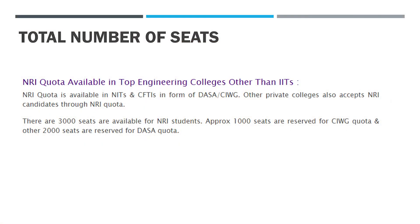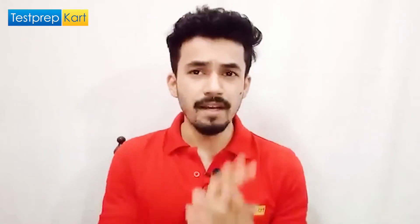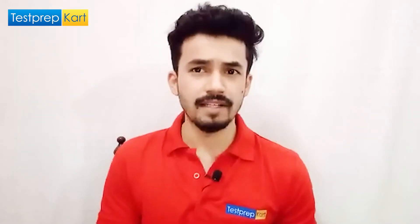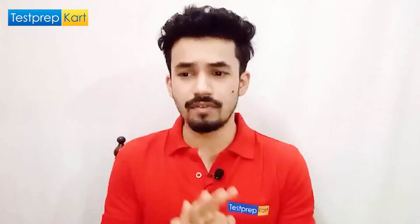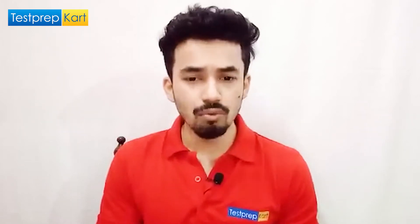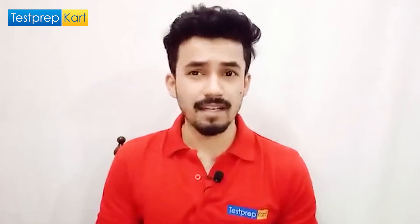NRI quota is available in NITs and CFTIs in the form of DASA and CIWG. There are a total of 3,000 seats available for NRIs — 1,000 reserved for CIWG quota and 2,000 under DASA quota.